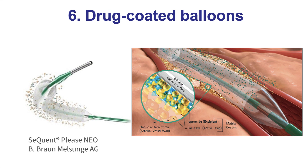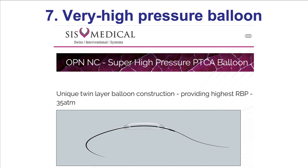Drug-coated balloons can be very useful, especially for coronary in-stent restenosis and also for small vessels. There are no coronary drug-coated balloons available in the U.S. currently, but some of the peripheral drug-coated balloons can be used off-label. However, they do have high profile and are difficult to deliver. There is one balloon called the SIS-OPN balloon with a very high rated burst pressure at 35 atmospheres that can help dilate balloon undilatable lesions, but again it is not available currently in the United States.